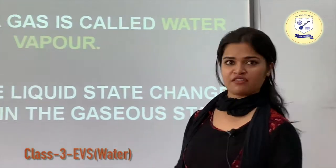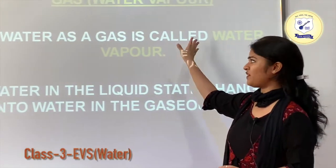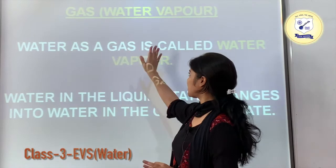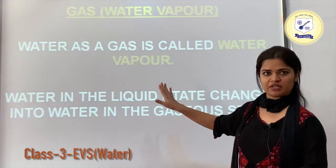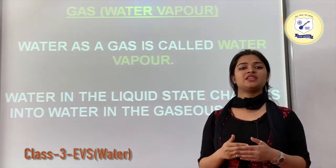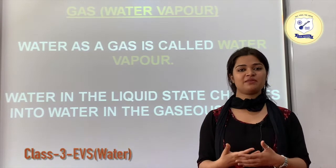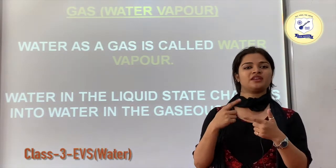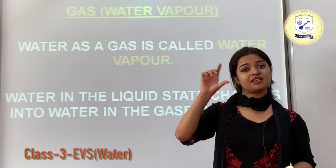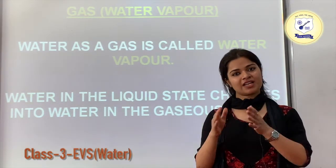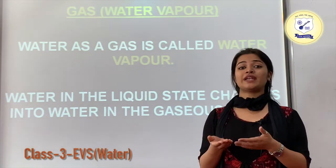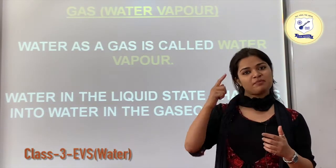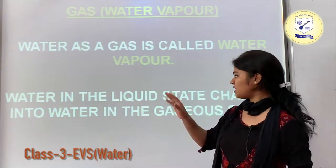The third form is gas, which we call water vapours. You can see vapours in the form of steam when cooking in a pressure cooker — when it whistles, steam comes out. That is an example of water vapour. Another example is a hot cup of tea, where vapours come out in the form of steam.